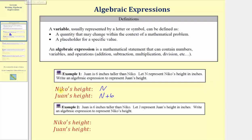As an example, if Nico was fifty-six inches tall, n would be equal to fifty-six. Notice how n plus six would be equal to fifty-six plus six, which equals sixty-two. Which means if Nico is fifty-six inches tall, Juan is sixty-two inches tall. Notice this example does show Juan is six inches taller than Nico.